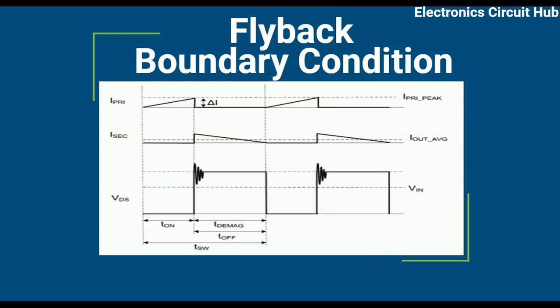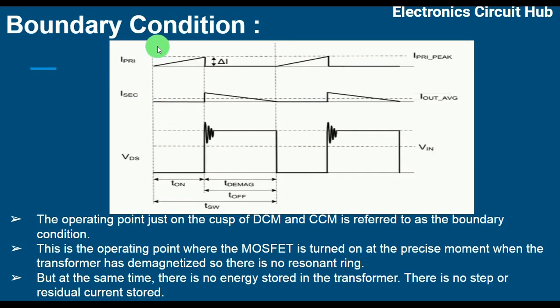Welcome to Electronic Circuit Hub. Today we are going to understand one more mode of flyback converter — how a flyback converter works in Boundary Condition Mode, or BCM mode. We have already understood the flyback discontinuous conduction mode, the flyback valley switching mode, the flyback quasi-resonant mode, and the flyback continuous conduction mode. Today is the last operational mode: the boundary condition mode. The operating point is just on the cusp of DCM and CCM, which is why it is referred to as boundary condition mode.